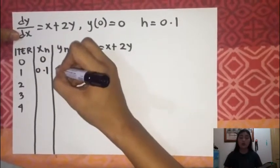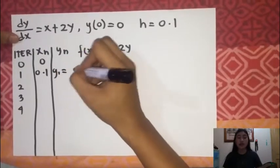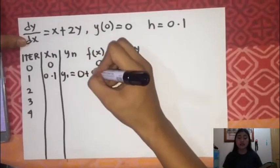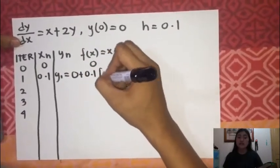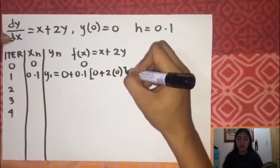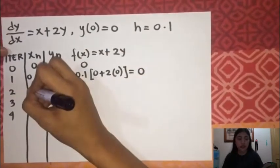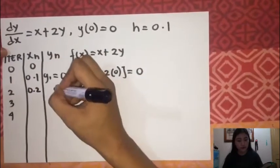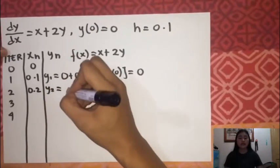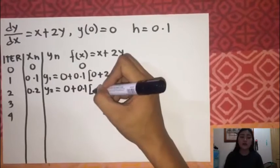Of course, xn and yn will both start at 0. The previous value of xn and yn is 0 plus the step size value 0.1 results to the first iteration xn 0.1. So y1 equals 0, previous value of y plus 0.1, the value of step size, multiplied by the given equation x plus 2y using the previous values of x and y.